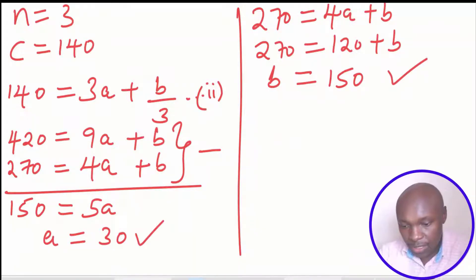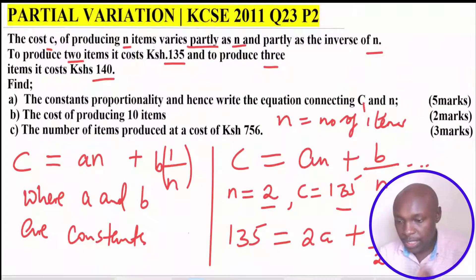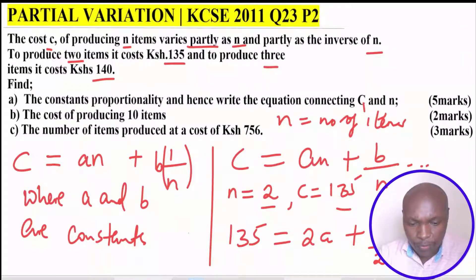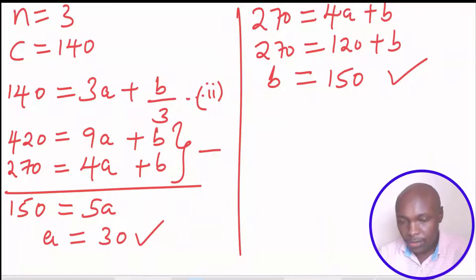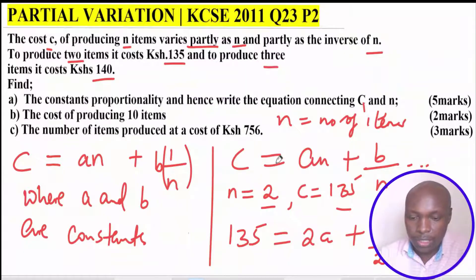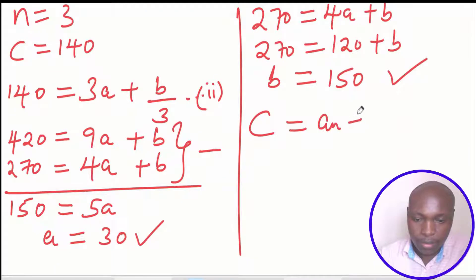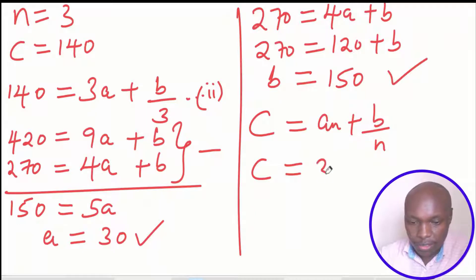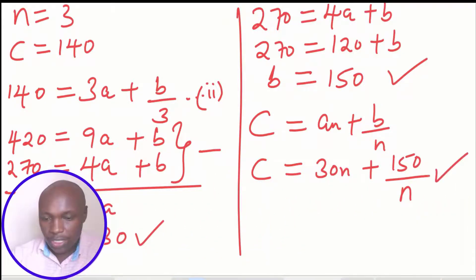So those are the constants of proportionality: A equals 30 and B equals 150. We were supposed to find the constants of proportionality and hence write the equation connecting C and N. Now substituting into C equals AN plus B over N, the equation connecting C and N is C equals 30N plus 150 over N.